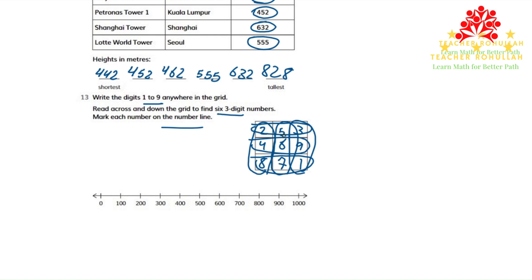To mark the first number on the number line, we have to find out 253 lies between which 200s. It's between 200 and 300. We know that 250 is halfway between these two numbers. And 253 is somewhere around here. 253.